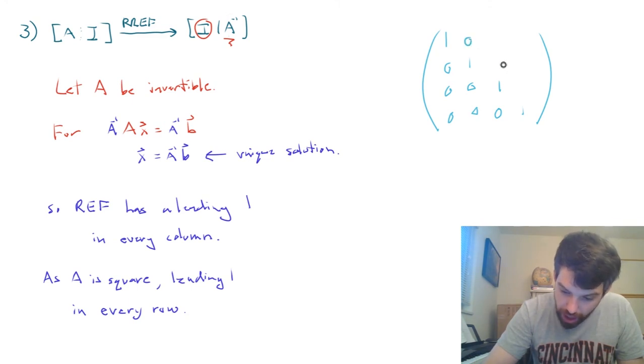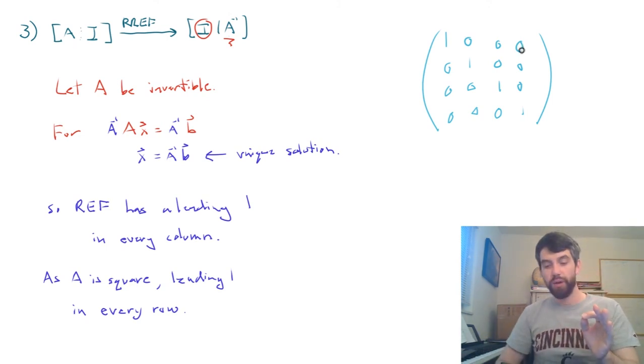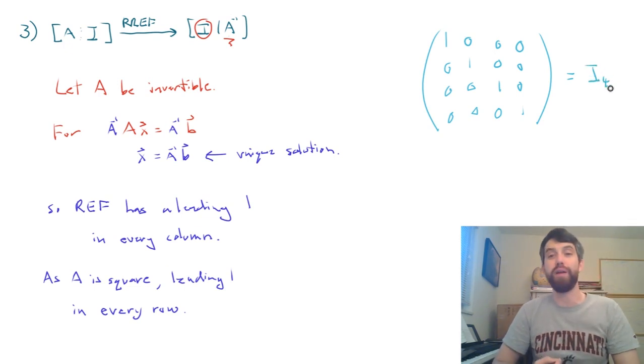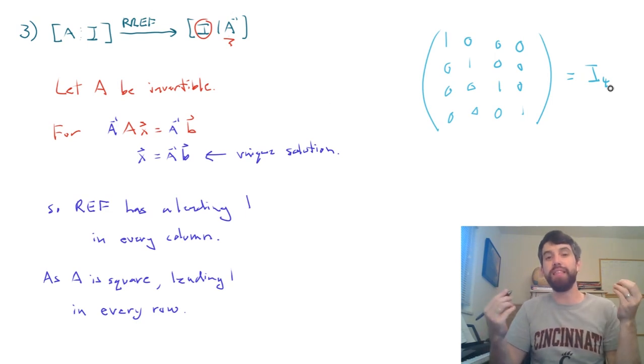And what we do is above the one, we're going to put a zero. Above the ones, we're going to put zeros. Above the ones, we're going to put zeros. In other words, what we have here is just the identity matrix. And I'll put i sub four for the 4×4 identity matrix. But generally, it's going to be the n×n identity matrix.